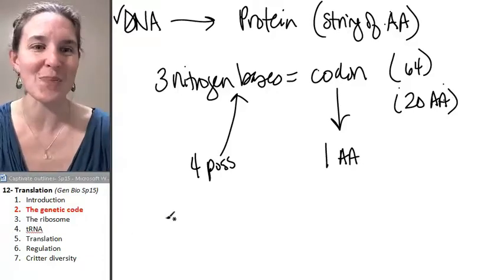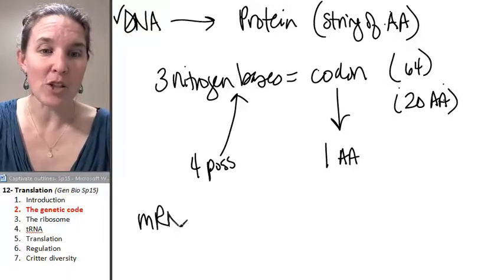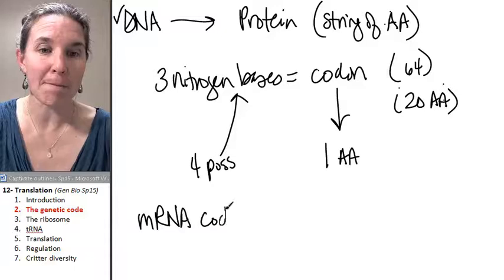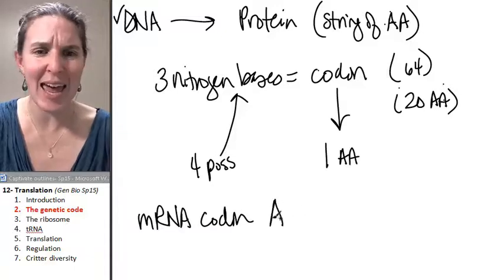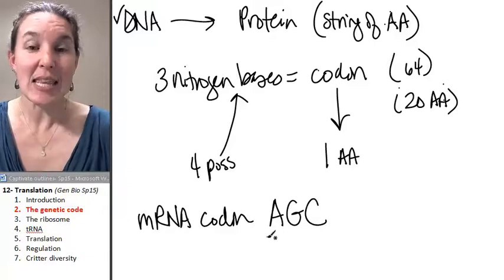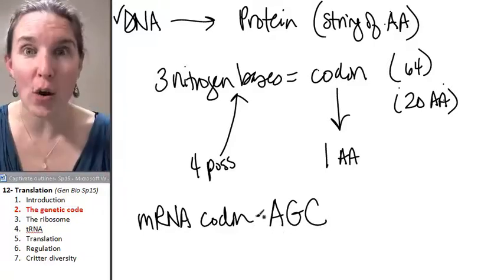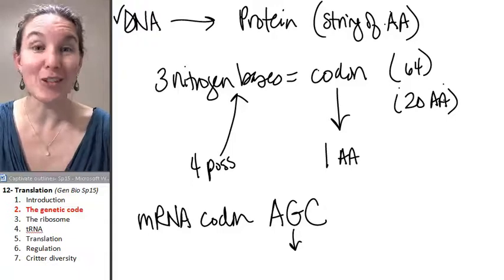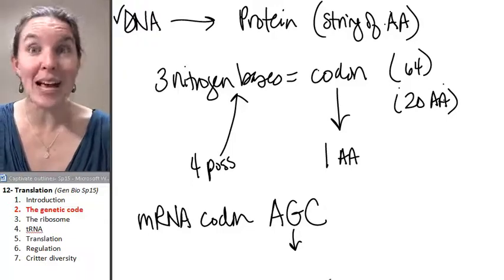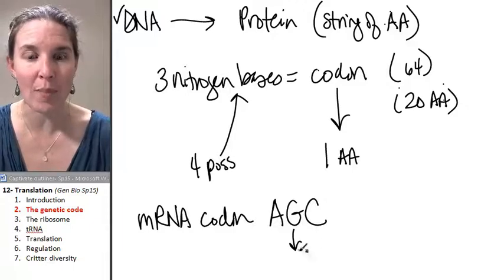So watch. For example, if we're going to deal with messenger RNA codon, we're going to have a codon that is, let's say, AGC. This sequence, this grouping, this codon, we've got a little chart that we can look at, and it will tell us exactly what amino acid is coded for by that codon.